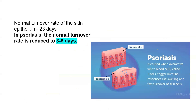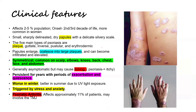Psoriatic lesions often appear at the site of injury, which is known as the Koebner phenomenon. The basic principle of this disease is that the normal skin turnover rate of 23 days is reduced to only three to five days. A large number of activated T-cells produce cytokines that cause swelling, redness, and fast skin cell turnover, and this whole process is self-sustained.